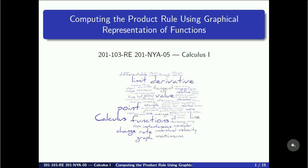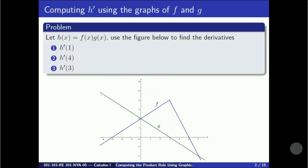Hi. In this video we show how we can compute the derivative of a product of two functions when we are only given a graphical representation of the functions. The problem is that we have the graphs of f and g, and h is the function defined as the product of f and g.